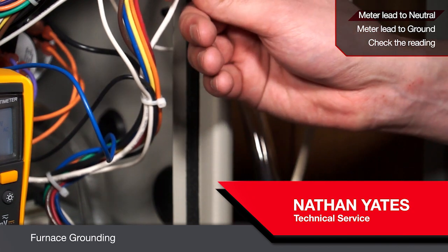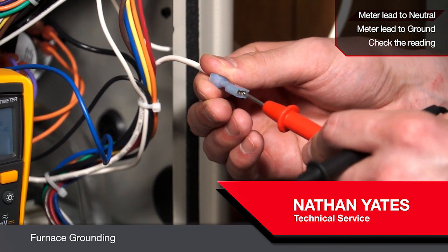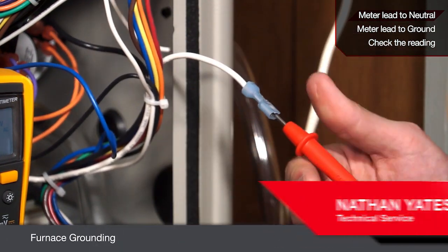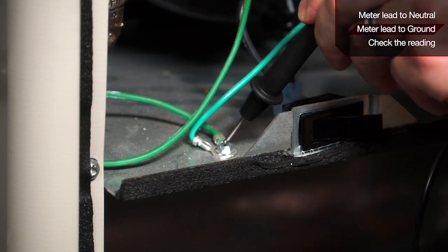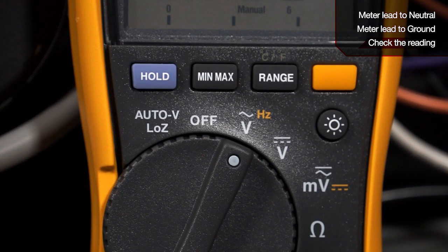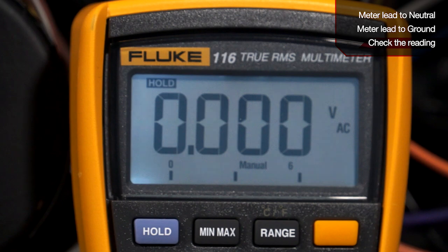The first thing you want to do is take your neutral wire, place one meter lead on your neutral. Next, take your other meter lead to your grounding screw. Then check your reading between your neutral wire and your ground.